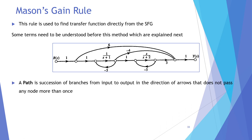Path basically us raaste ko kehte hain jahan aap input signal se start honge aur output signal tak pohonchenge, in the direction of arrows. Succession of branches aap karenge in the direction of arrows chalenge, aur is tarah se chalenge ke kisi bhi ek node se aap ek se zyada dafa pass nahi karenge.